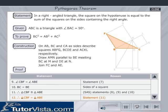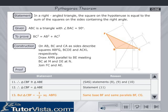Therefore, triangle CBF = triangle ABE. But triangle CBF = half of square ABFG, since they have the same base BF and are between the same parallels BF and CG.